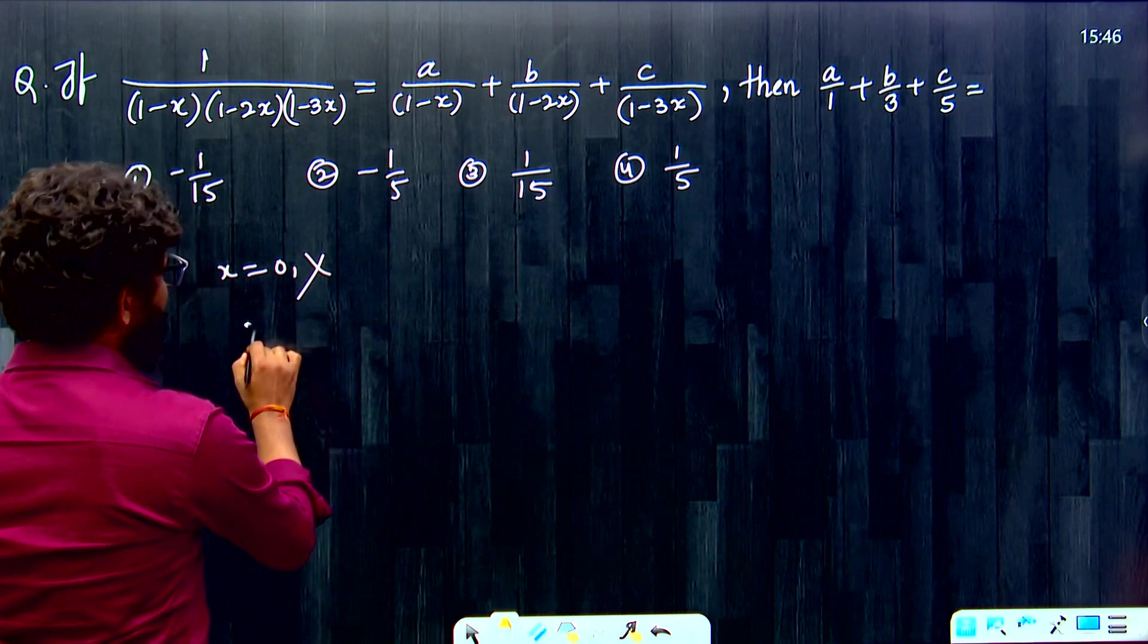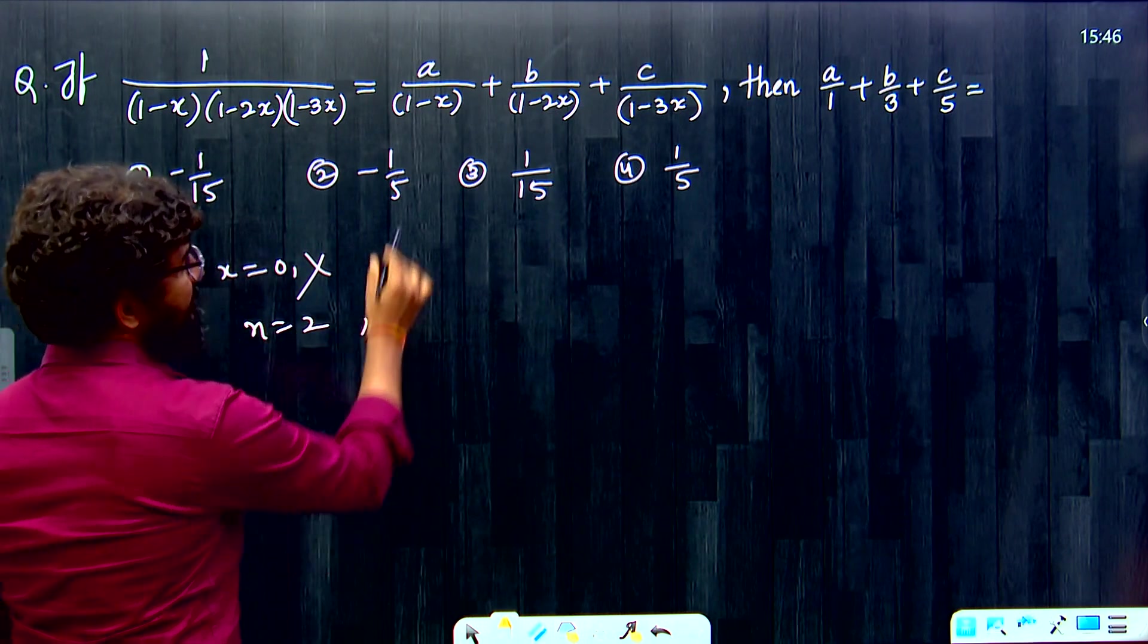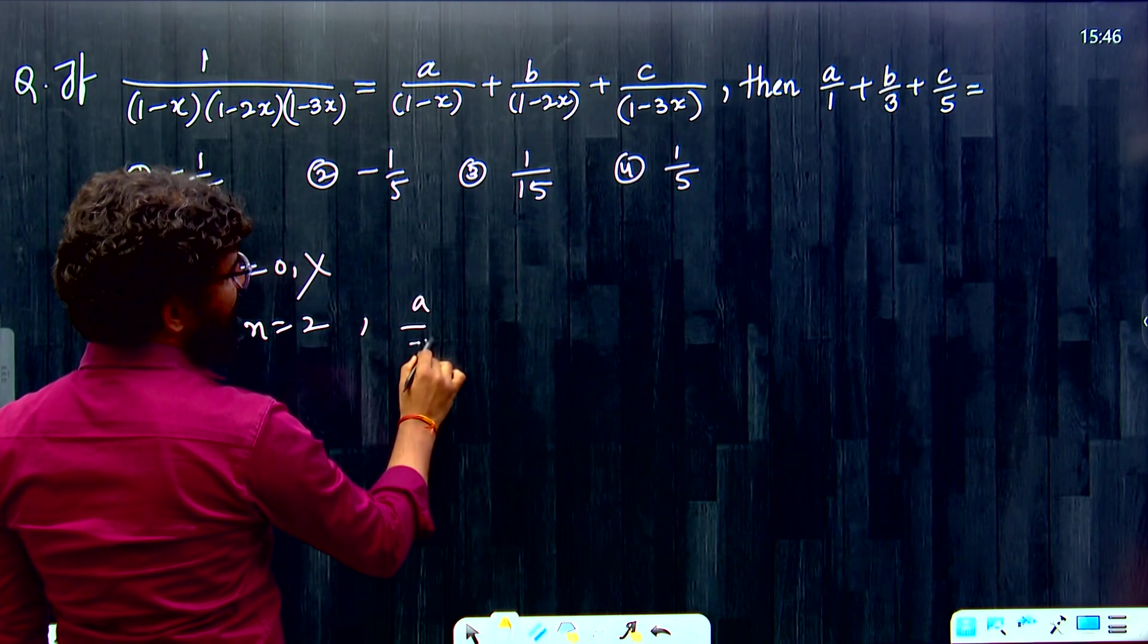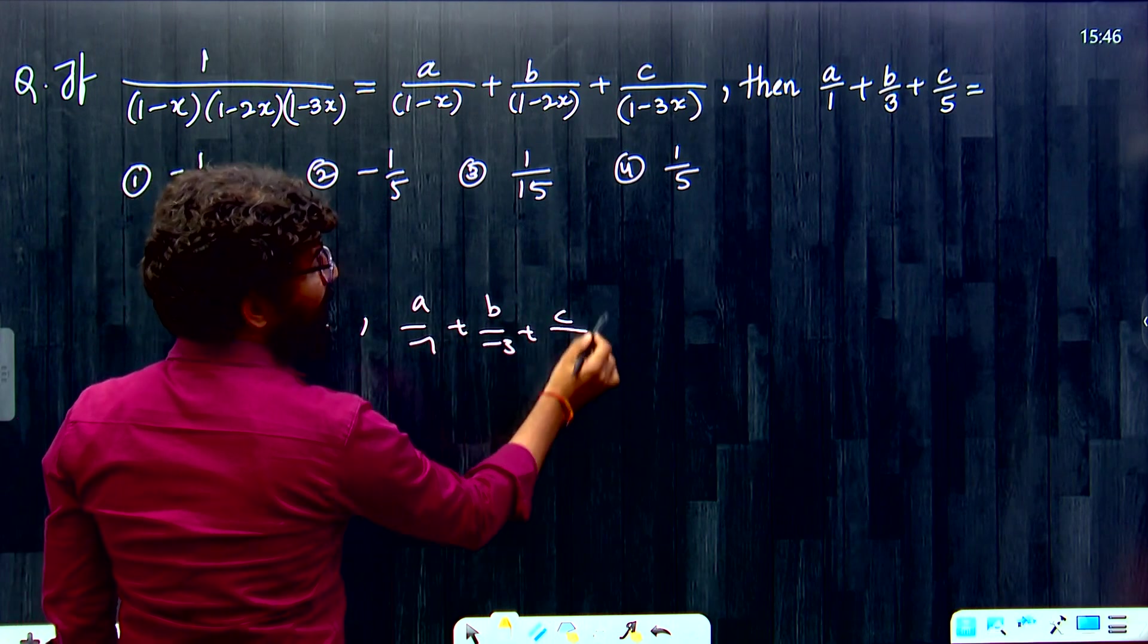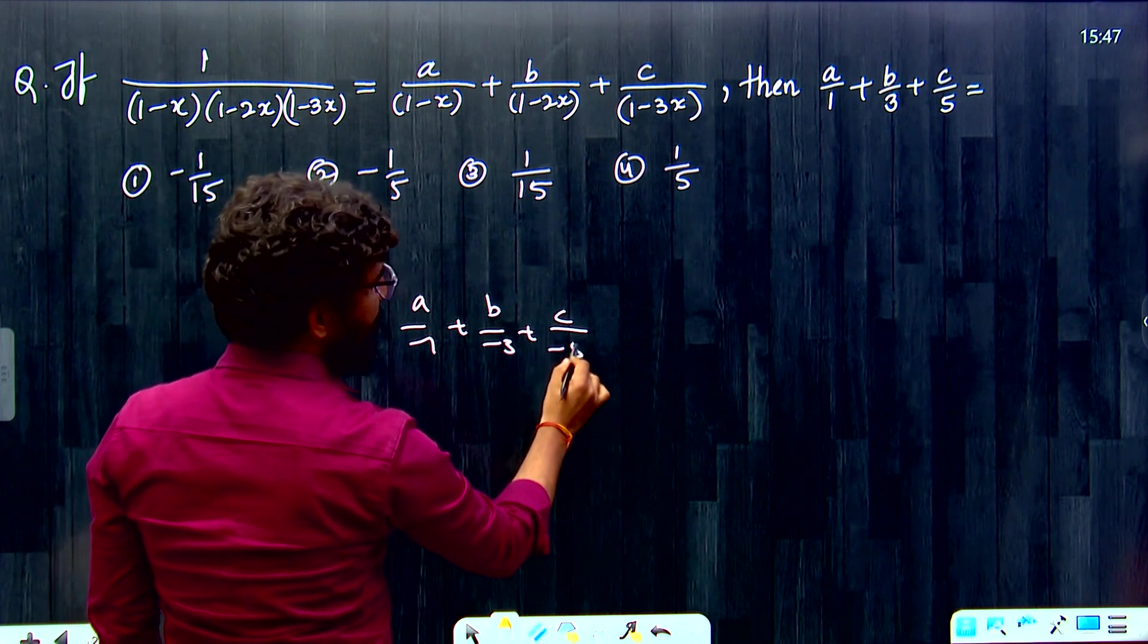So here you need to find, substitute X is equal to 2. So substitute here. A by 1 minus 2 minus 1 plus B by 1 minus 4 minus 3 plus C by 1 minus 6 minus 5 is equal to.